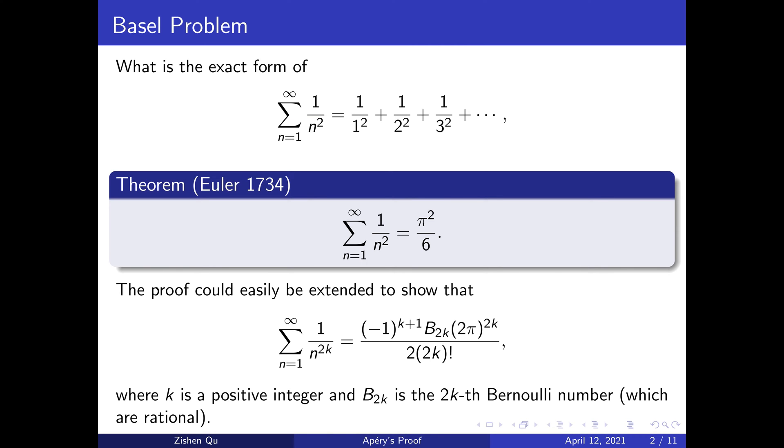The Basel problem asks for the exact form of the sum of the reciprocals of squares, and this was solved by Euler in 1734. He determined that this series has value π²/6. The content of proof can be modified to show that the sum of the reciprocals of perfect even powers has a precise formula. In particular, they are the product of some precise rational term and π to the 2k.